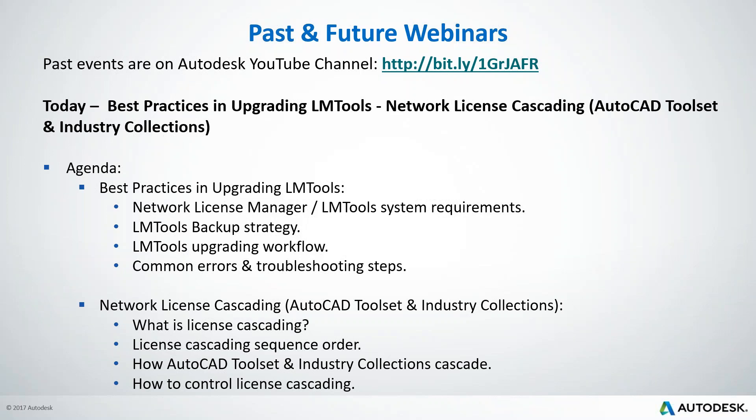For each topic, we'll first cover network license manager system requirements, touch on backup strategies and upgrading workflow, and then explain common errors and troubleshooting steps. Followed by network license cascading, we'll explain what license cascading is, the sequence order, and how AutoCAD toolset and industry collections cascade. At the end, we'll explain how to control the license cascading for AutoCAD toolset and industry collections.